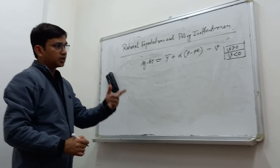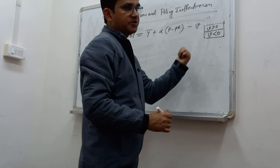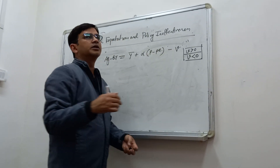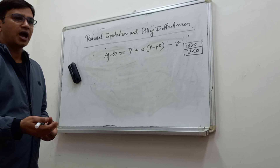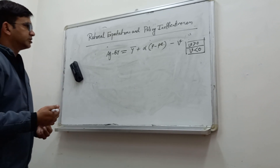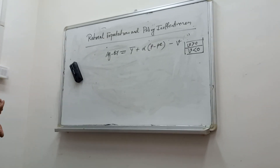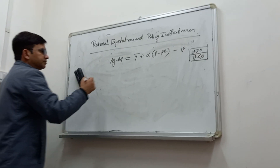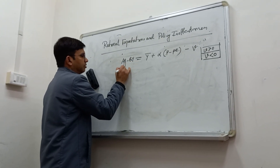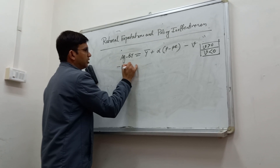As I mentioned in my previous video, the properties of V are: its mean is zero and its variance is constant — it is a random variable. Now we have to solve for the value of P given Y.